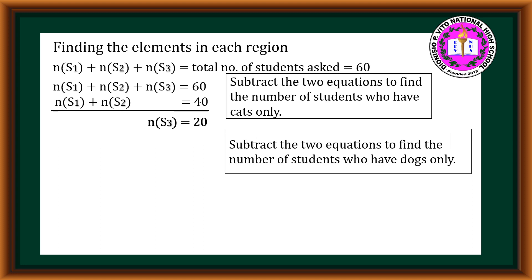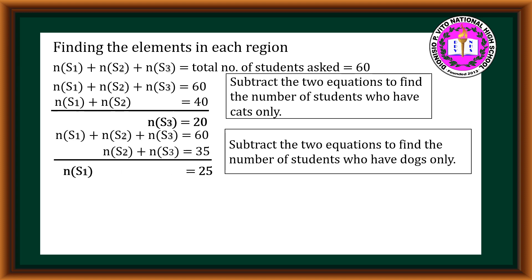Next, subtract the two equations to find the number of students who have dogs only. Given S₁ + S₂ + S₃ = 60, minus (S₂ + S₃) = 35, which is the number of students who have cats. Therefore, S₁ = 25.